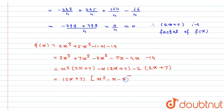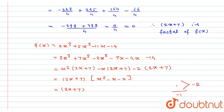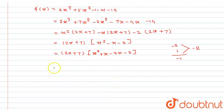Factoring out (2x + 7), I get (2x + 7)(x² − x − 2). Now I need to factor x² − x − 2. I need two numbers whose product is −2 and sum is −1, which are −2 and +1. So I split: x² + x − 2x − 2.